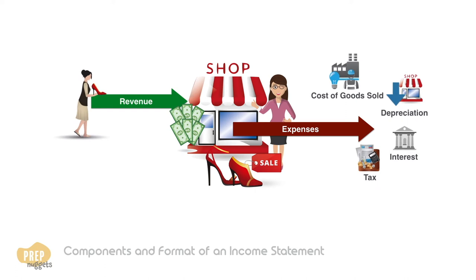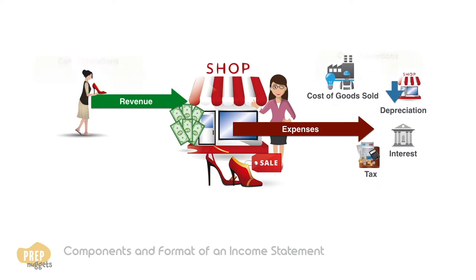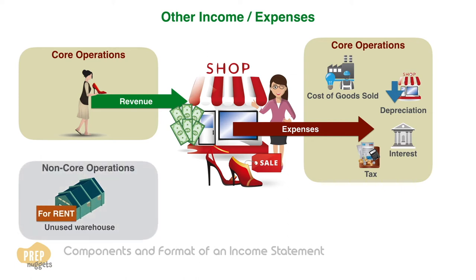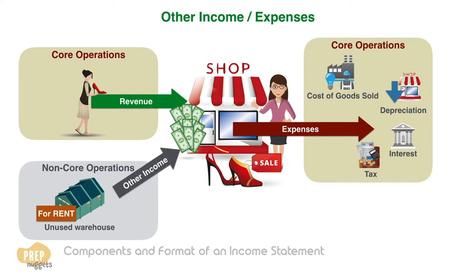What we've described so far are considered core operations of a company. Companies can make money outside their core operations. For example, a retailer may have unused warehouse space that is rented out for some side income. This revenue is classified under other income, and any expenses made outside of core operations is regarded as other expenses.